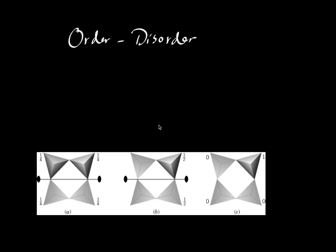Here we're going to use another diagram from Kline and Dutro, from their chapter 12. It illustrates the issue of order-disorder. This is a different kind of transformation compared to the two others discussed in other videos — displacive and reconstructive. We can also call this perhaps a third-order transformation, compared to reconstructive, which is first order, and displacive, which is second order.